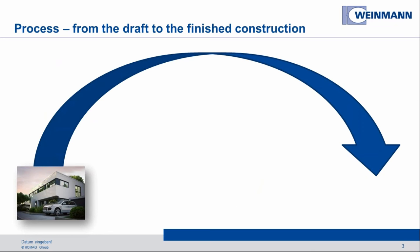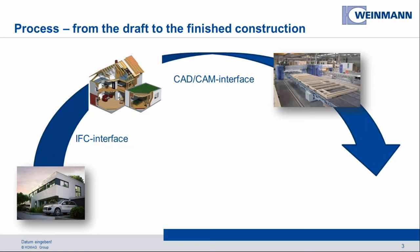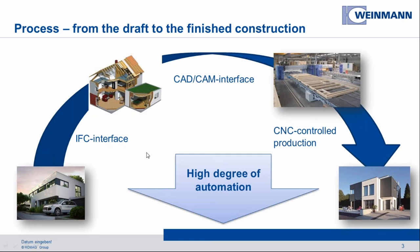How does the information flow from the architecture program into the machines? It starts with software from the architecture, then over the IFC interface it goes into a CAD system to make the elements for the walls, floors, and roofs. Then over the interface we create a file, go into the machine, and produce the elements — whether open elements or closed elements — which are then brought on site and assembled together.